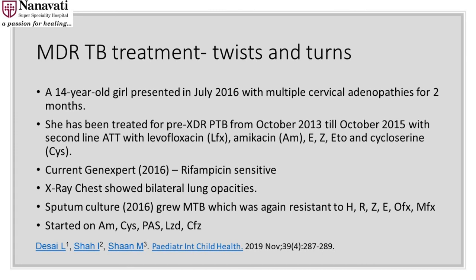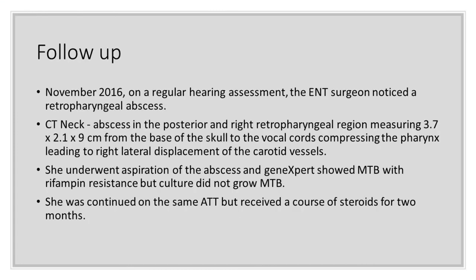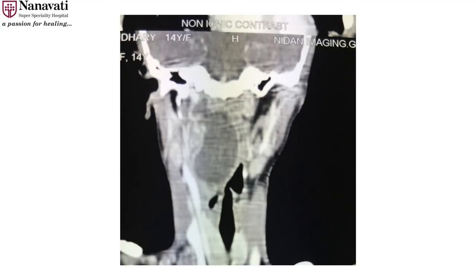We started her on amikacin, cycloserine, PAS, linezolid, and clofazimine. On follow-up in November 2016, we had sent her to ENT for a hearing test and he noticed a retropharyngeal abscess — she had no symptoms at all. A CT scan showed an abscess from the base of the skull to the vocal cords compressing the pharynx. We aspirated the abscess to determine whether this was a paradoxical reaction or worsening MDR-TB. GeneXpert showed MTB with rifampicin resistance, but the culture did not grow MTB, so we thought it was a paradoxical reaction. We continued TB treatment and added steroids for two months.